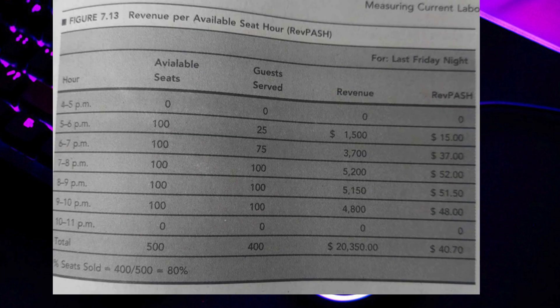Revenue per available seat hour shows the per-hour breakdown — for example, from 4–5 PM, 5–6 PM, and so on — indicating how many seats are available during each time slot. During peak hours, all 100 seats may be occupied, while during 10–11 PM there may be zero available seats because most guests have already gone home.